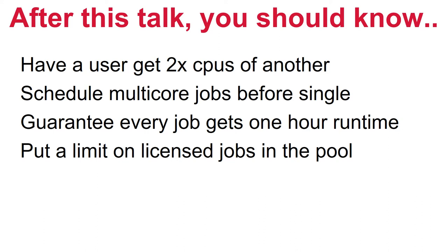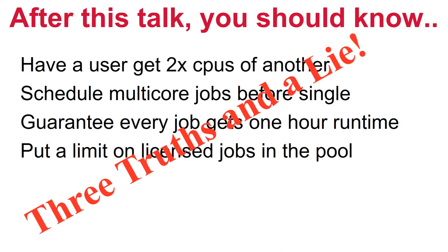After this talk, an HTCondor administrator will be able to configure a pool to give a user twice the CPUs of another, or make sure multi-core jobs have priority over single-core jobs, or guarantee that every job has a one-hour minimum before any preemption may happen. And if an external license limits the number of running jobs, how to have Condor implement that limit. One of these cannot be done by the negotiator, and by the end of this talk, you will understand why and how to implement it outside the negotiator.